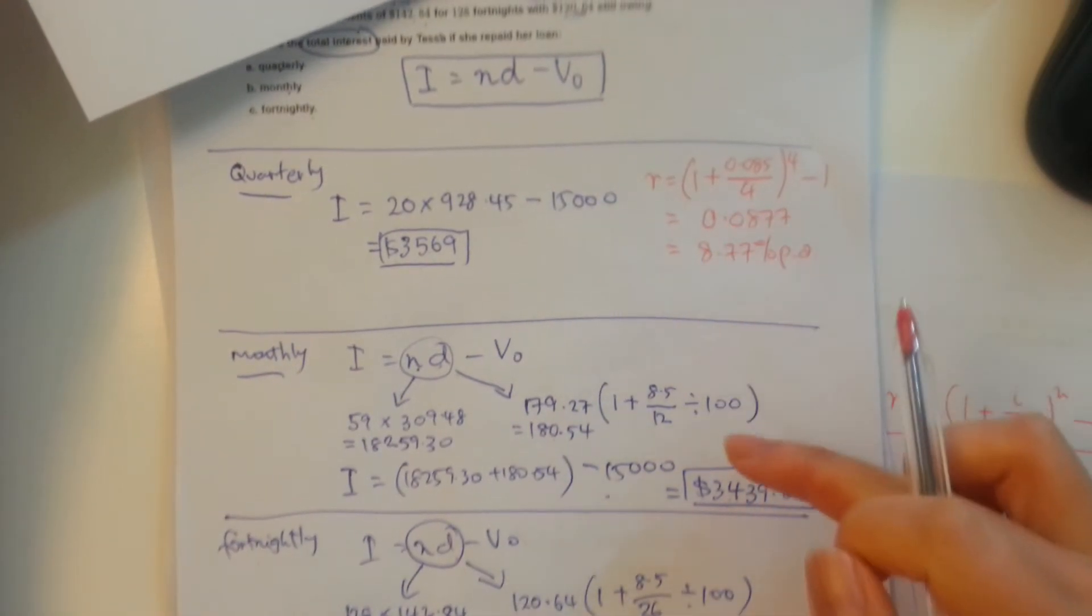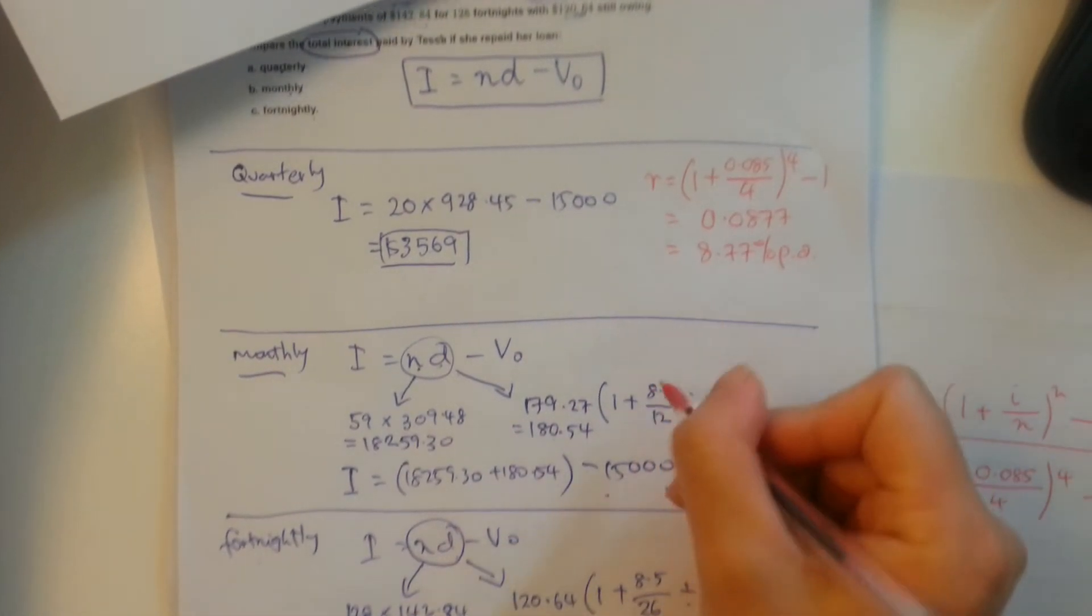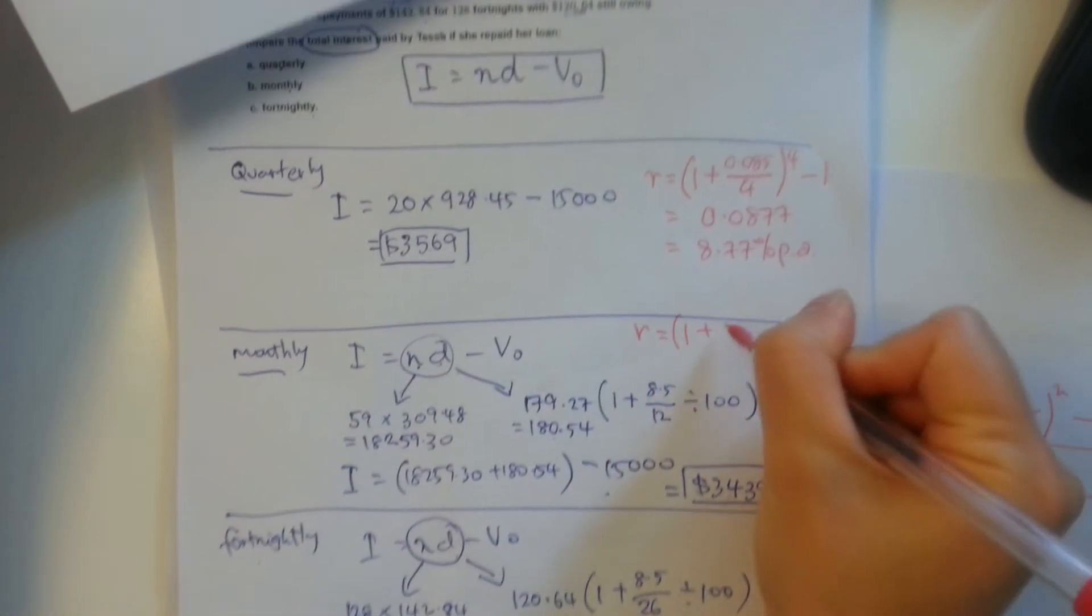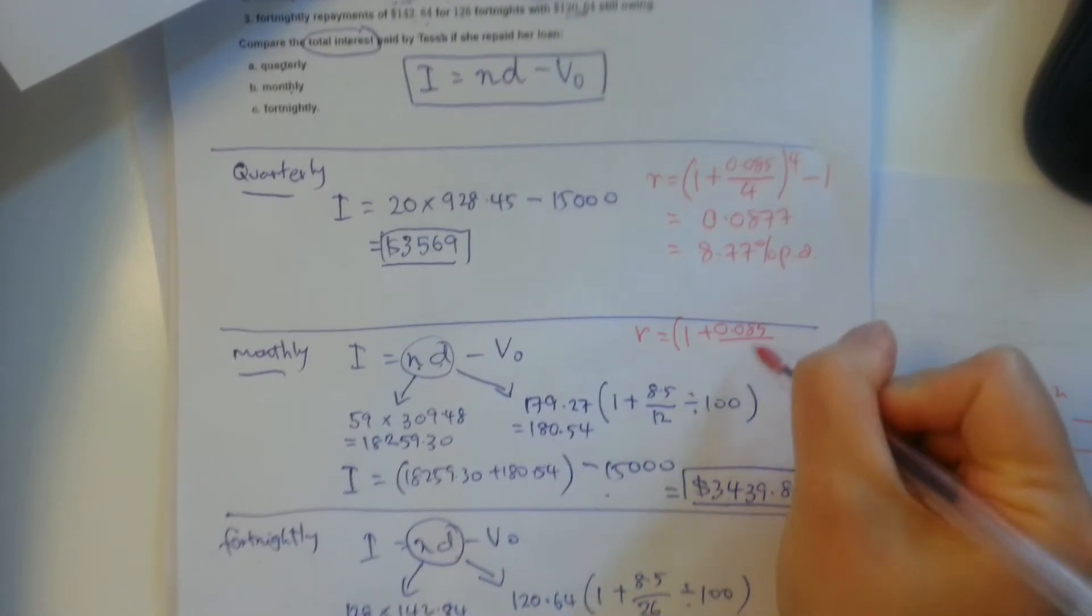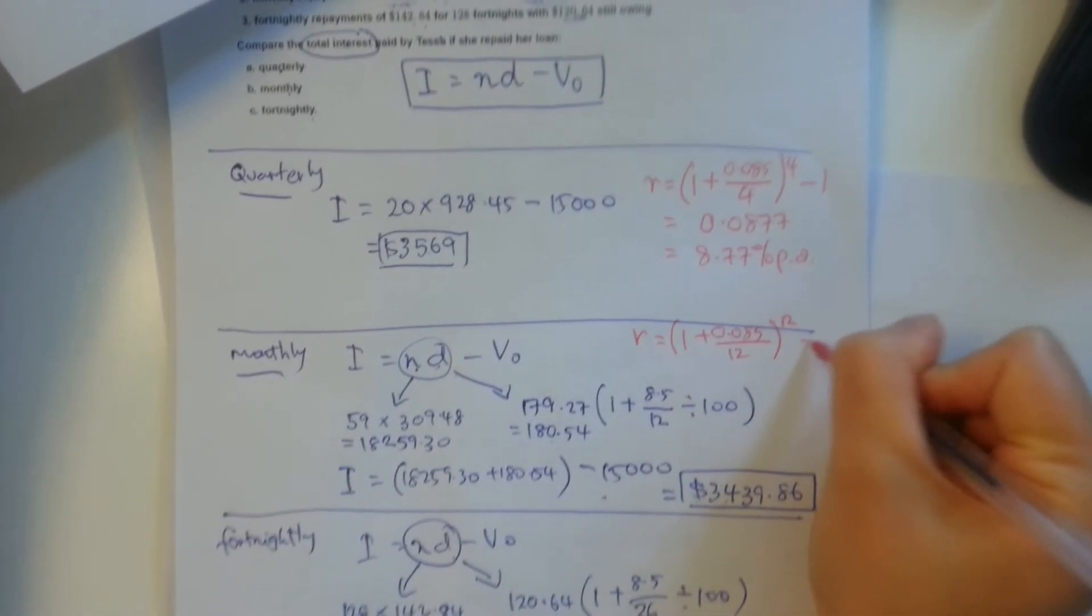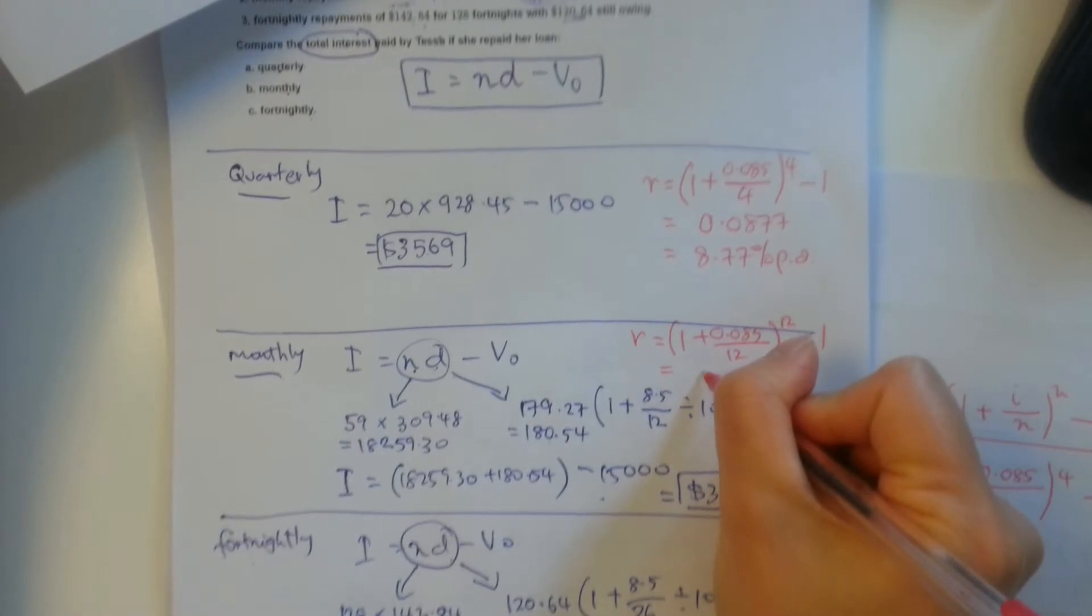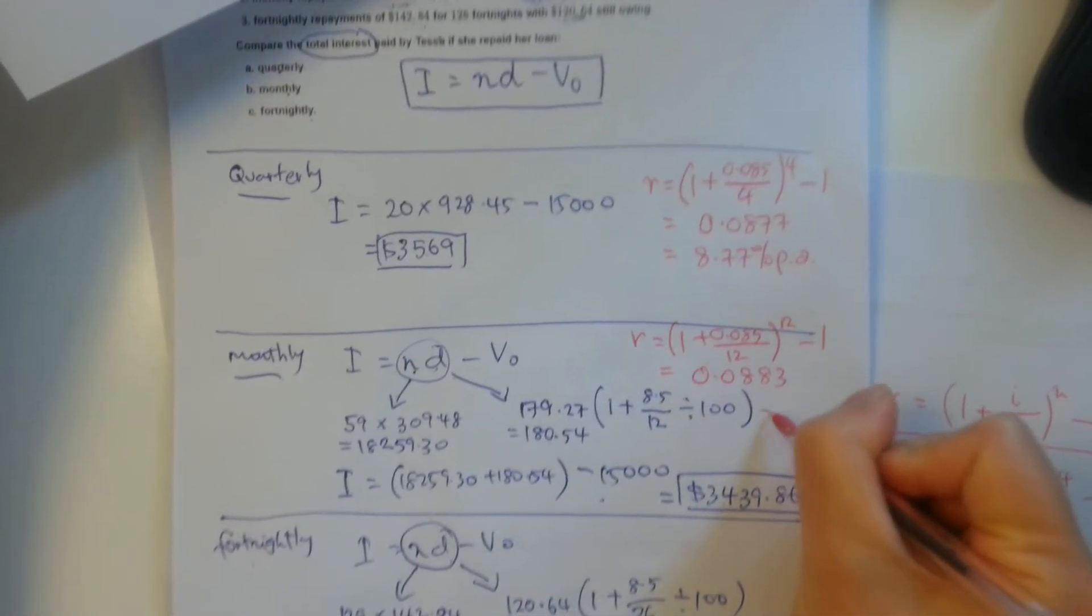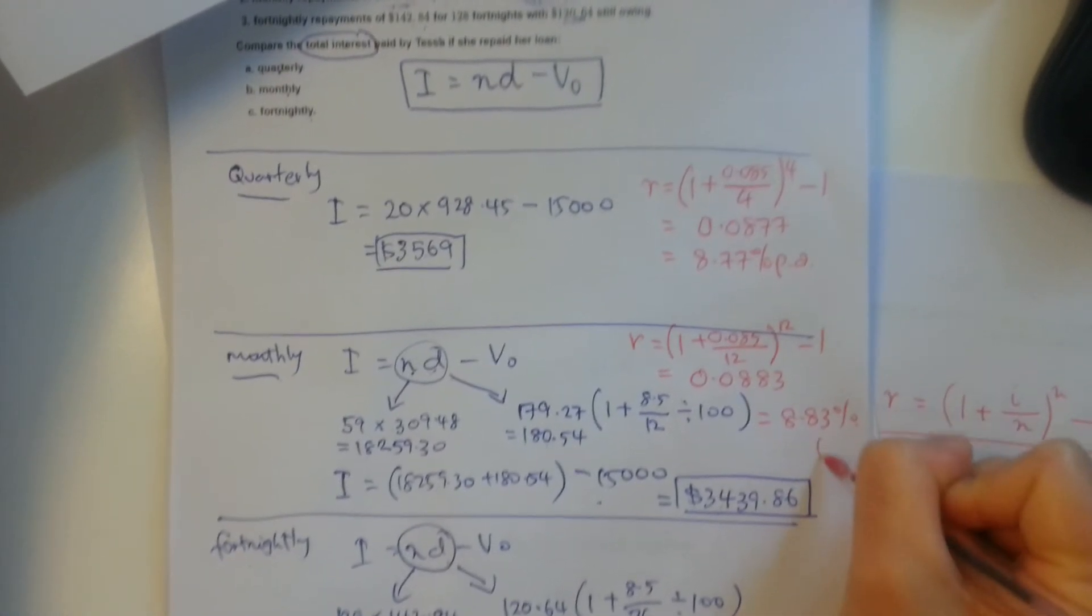And we can continue to work out the effective annual interest rate for the other two conditions using the same method. So R equals 1 plus 0.085, because that's the nominal rate, divided by monthly, which is going to be 12 periods a year to the power of 12 minus 1. Our effective annual interest rate is going to be 0.0883, which is effectively 8.83% per annum.